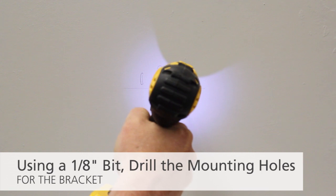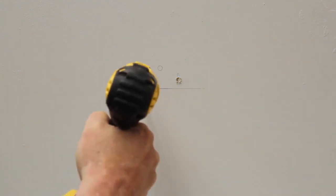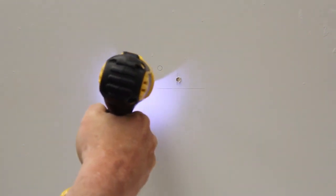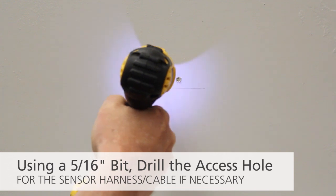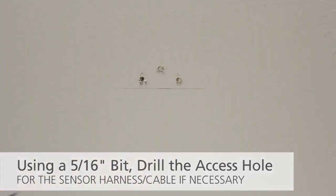Using a 1 1/8 inch bit, drill the mounting holes for the bracket. Using a 5/16 inch bit, drill the access hole for the sensor harness if necessary.